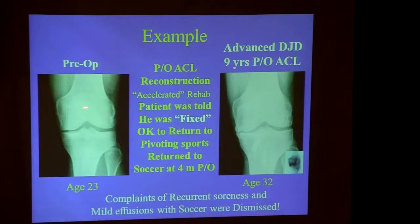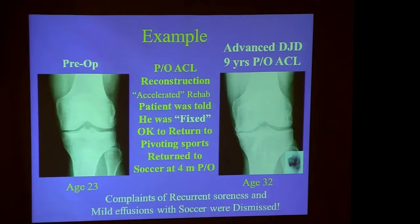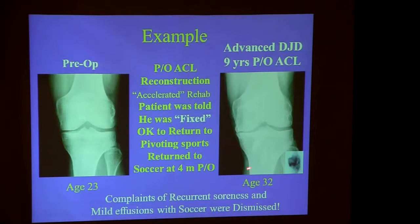Here is an example from my own practice. This is a pre-op x-ray of a gentleman at 23 who had a soccer injury and ACL rupture. He had an ACL reconstruction with bone-tendon-bone done elsewhere. He had an accelerated rehab program — which I think is anti-biological and quite wrong — and was told he was fixed and okay to return to pivoting sports at four months. Returning a patient to sport as soon as possible is anti-biological and dangerous. He returned to sport at four months and had recurrent soreness and mild effusions, which were dismissed.